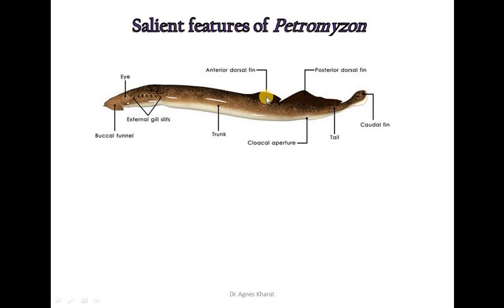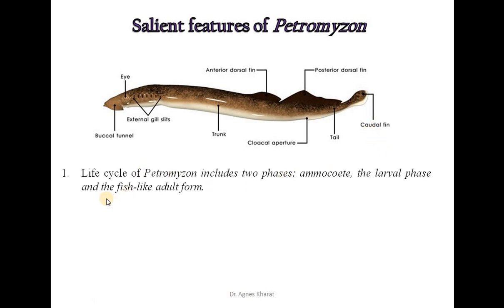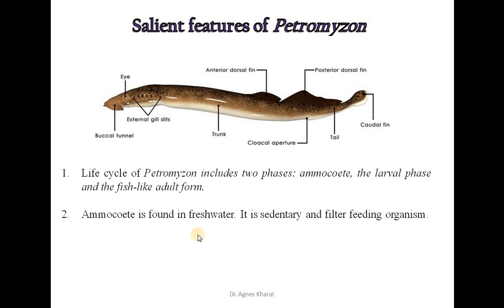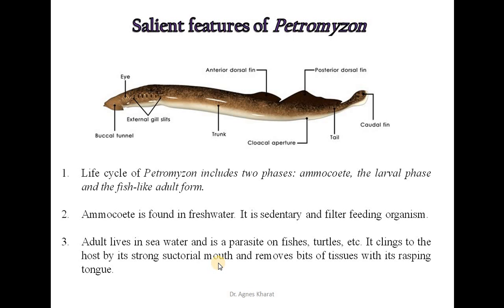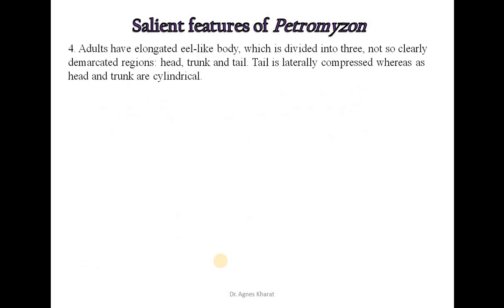There are two unpaired dorsal fins: the anterior large dorsal fin and the posterior dorsal fin. The tail region has a caudal fin. The life cycle of Petromyzon includes two phases: the first phase is Ammocoetes, which is a larval phase, and the fish-like adult form. Ammocoetes or larval phase is found in fresh water and is a sedentary filter feeding organism. The adult lives in seawater and is a parasite on fishes and turtles. It clings to the host by its strong suctorial mouth and removes bits of tissue with its rasping tongue. Adults have an elongated eel-like body divided into three regions: head, trunk and tail.